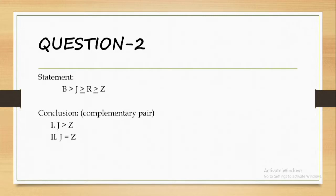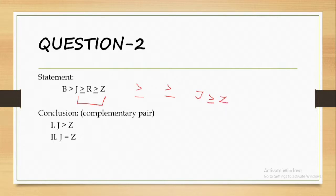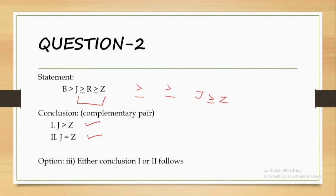For the second question, this is the complementary pair example. Comparing J and Z: two symbols are greater than or equal to, so the answer is J greater than or equal to Z. Conclusion 1 gives greater than, and conclusion 2 gives equal to — these are the split parts. So the answer is option C: either conclusion 1 or conclusion 2 follows. This is the complementary pair where the answer splits into equal to.